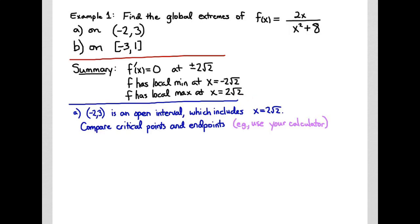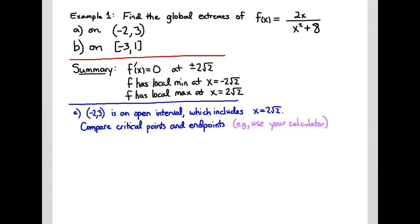Once we have our critical points, we can now go to our intervals. Let's look at our first interval, the open interval from -2 to 3. The open interval (-2, 3) doesn't satisfy the extreme value theorem, which requires a closed interval, so we're not guaranteed to actually have global extremes. We do know this interval includes a single critical point, 2√2, because our other critical point -2√2 is outside the interval.